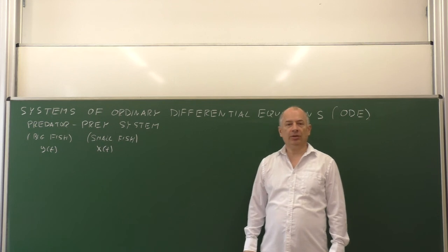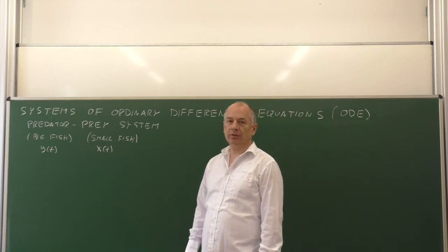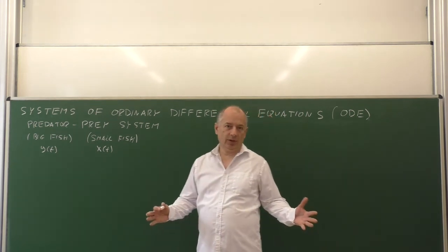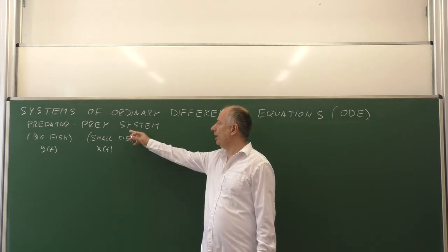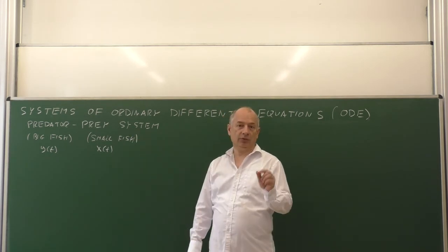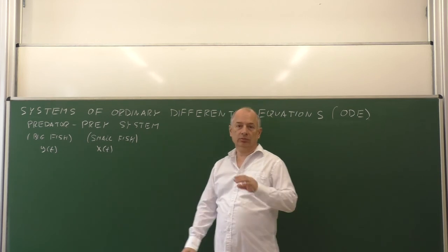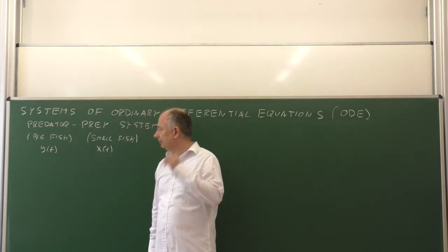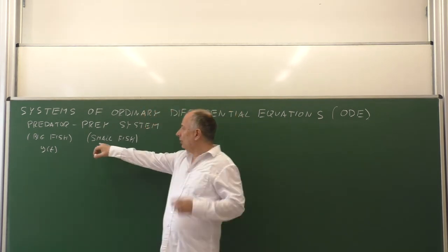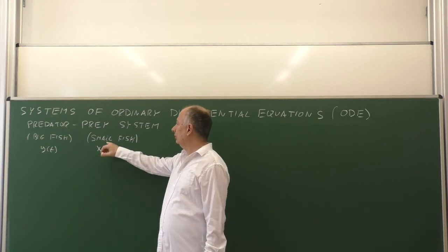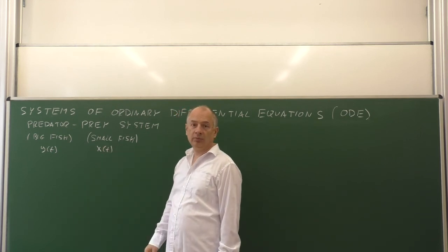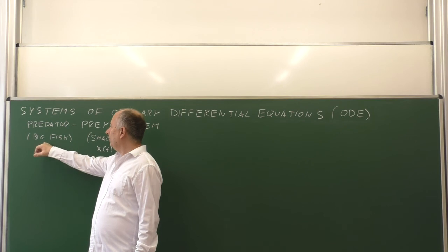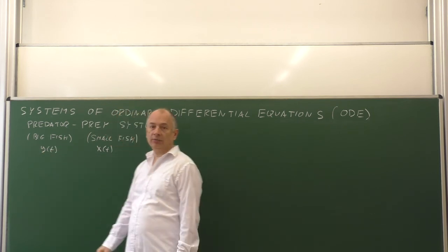As an interesting application of differential equations, let us consider the predator-prey system. By predator, you can think of some big fish, and prey, you can think of some small fish. Small fish eat some green stuff, and big fish eat small fish. Let us denote the number or concentration of small fish x as a function of time t, and the concentration of the big fish or the predator as y as a function of time t.